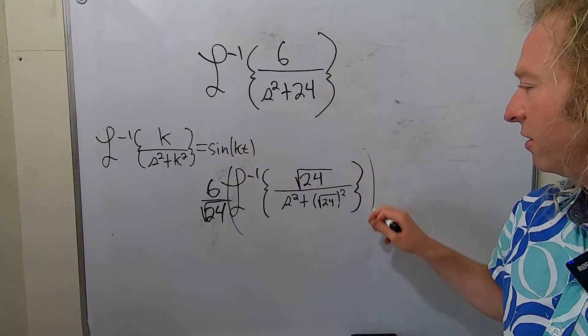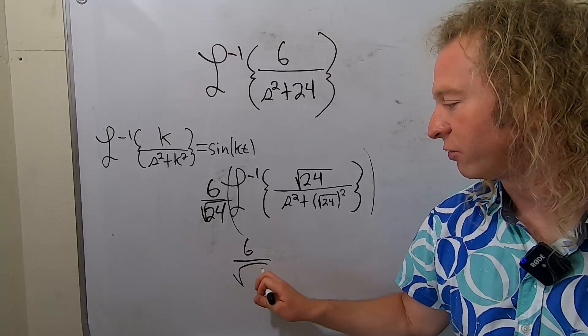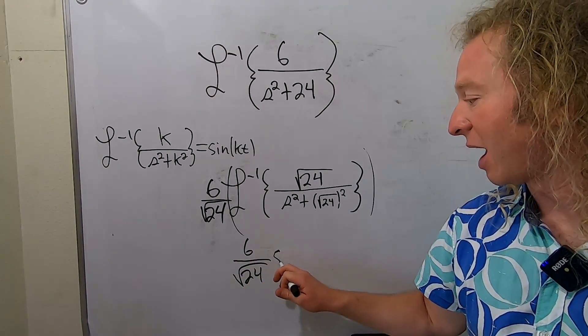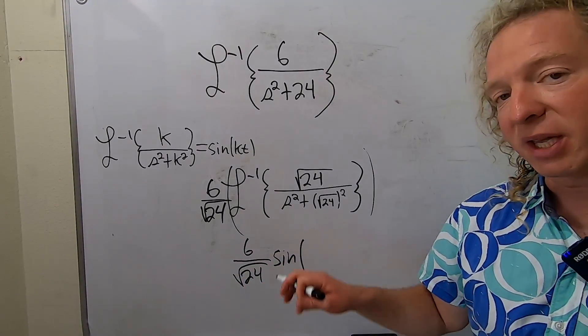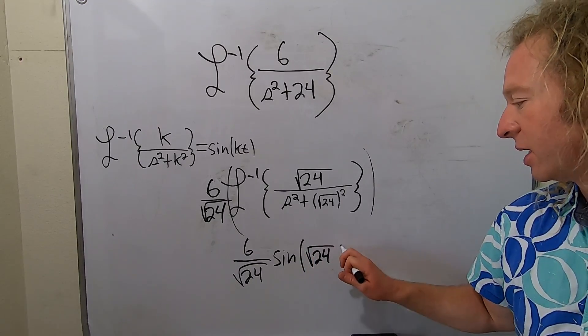All of this is going to give us a sine function. This is 6 over the square root of 24, sine of kt. But k is the square root of 24, so it's the square root of 24 times t.